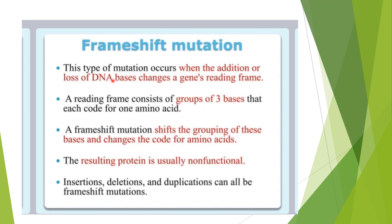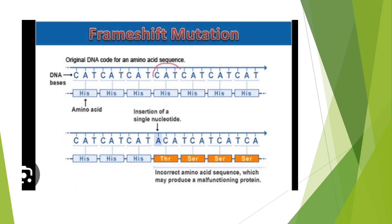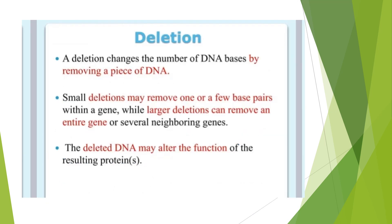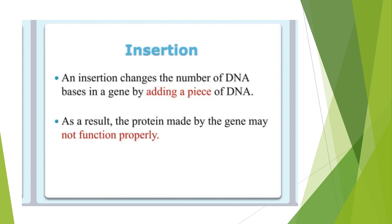Frame shift mutation is a type of mutation that occurs when the addition or loss of DNA bases changes the gene's reading frame. A reading frame consists of groups of three bases that each code for one amino acid. It can occur due to deletion, insertion, or duplication, all of which can cause frame shift mutation.